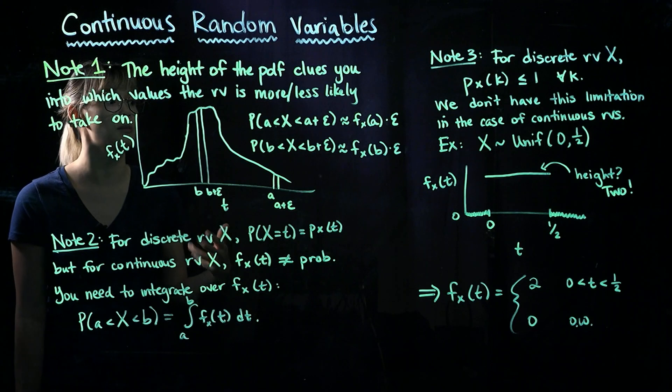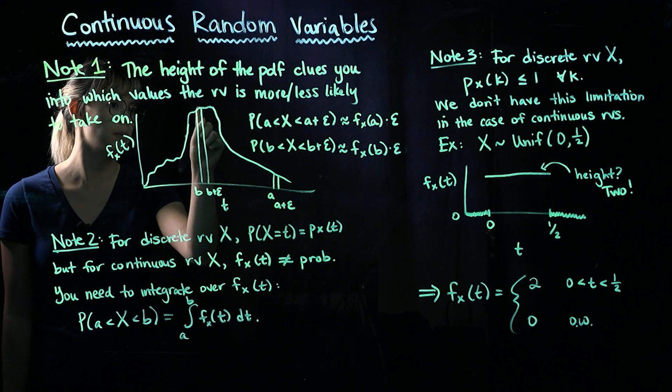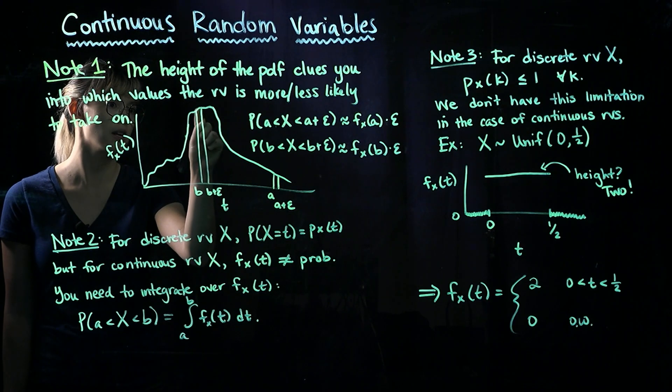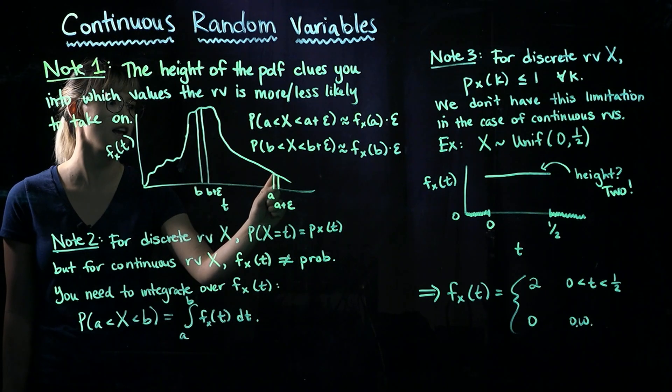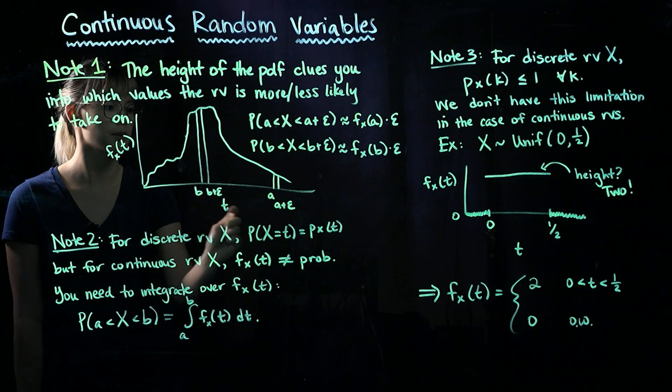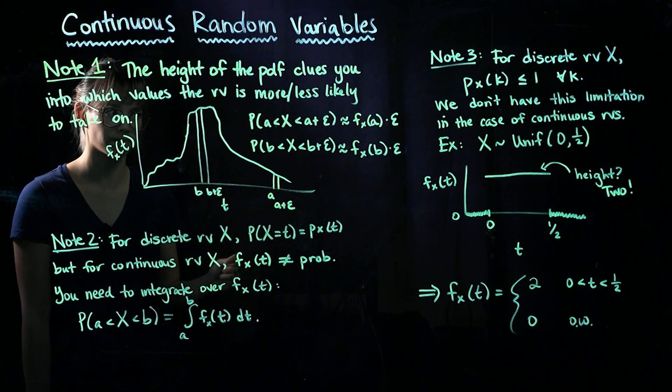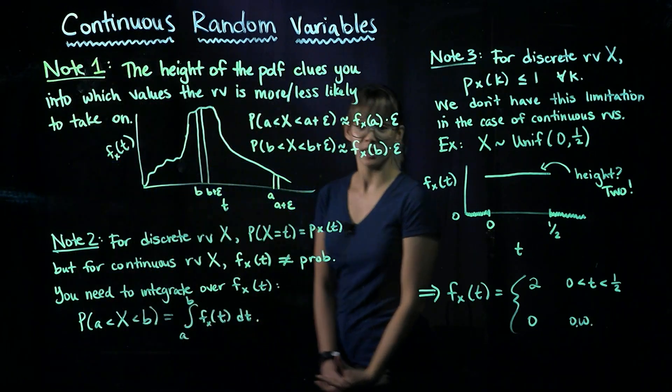So if we have the same width for both of these intervals, in other words we're using the same epsilon in both cases, then because the PDF evaluated at B is much greater than the PDF evaluated at A, the random variable is much more likely to be between B and B plus epsilon compared to A and A plus epsilon. Alright, so that's our first note.